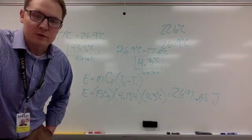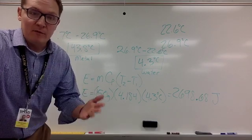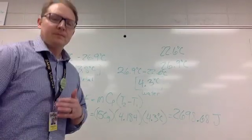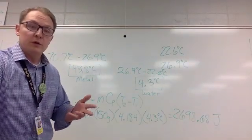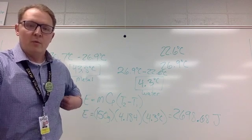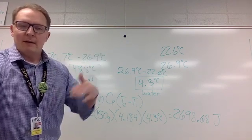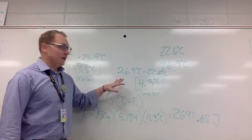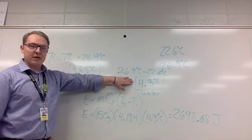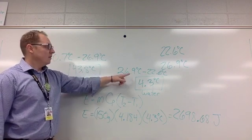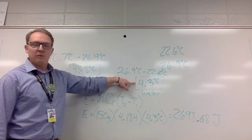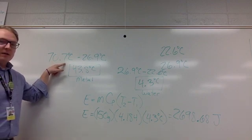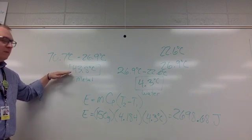And since this is energy, we use a capital J for joules. That's how much energy the water actually absorbed. Now before this video gets insanely long, what we want you to do is follow the same process for your other two cubes of metal that you put in water. Go through on the same lab sheet or on a separate sheet of paper if you need more room, and do the same math. You'll figure out how much the temperature of the water changed by doing the final temperature minus the initial.